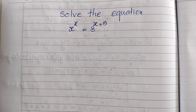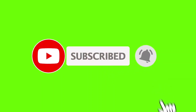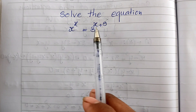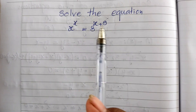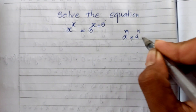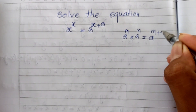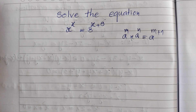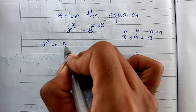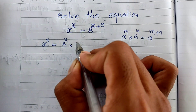Now let's go to the solution together. Our equation is 8 power H equals 3 power H plus 9. I use the rule that a power m multiplied by a power n equals a power m plus n. So for this equation I write: 8 power H equals 3 power H multiplied by 3 power 9.